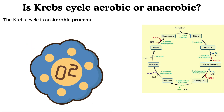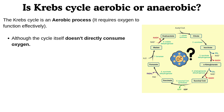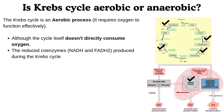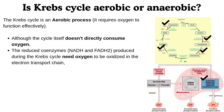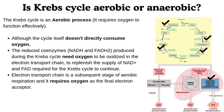The Krebs Cycle is an aerobic process. It requires oxygen to function effectively, although the cycle itself doesn't directly consume oxygen. The reduced coenzymes NADH and FADH2, produced during the Krebs Cycle, need oxygen to be oxidized in the electron transport chain, to replenish the supply of NAD+ and FAD required for the Krebs Cycle to continue. The electron transport chain is a subsequent stage of aerobic respiration, and it requires oxygen as the final electron acceptor.